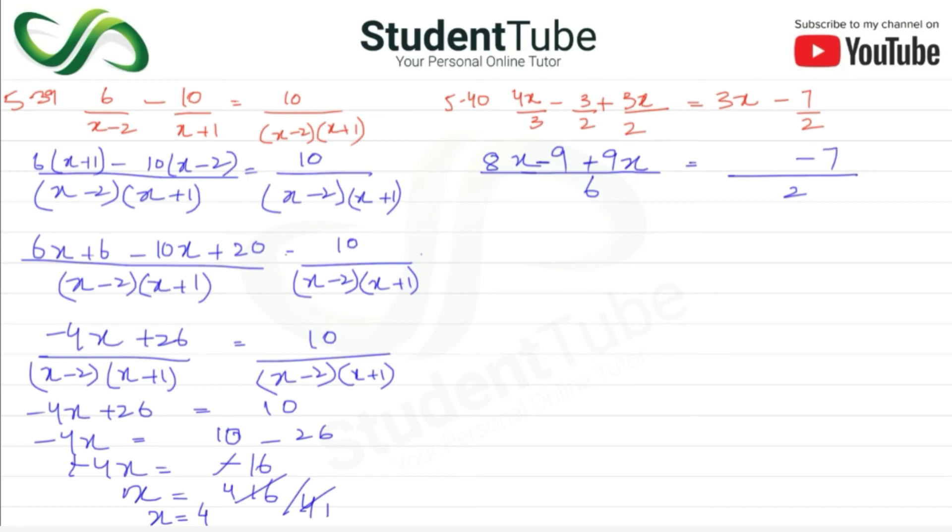Then 2 multiply, so 2, 3s are 6x. 8x and 9x is 17x, and minus 9, upon 6 is equal to 6x minus 7 upon 2.